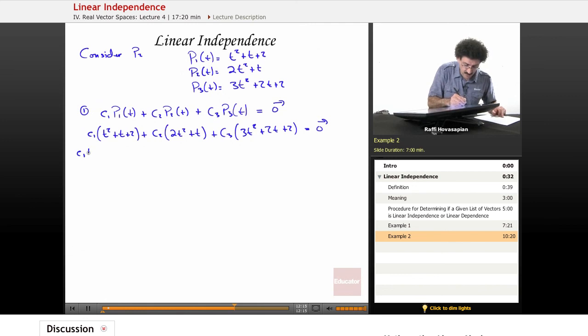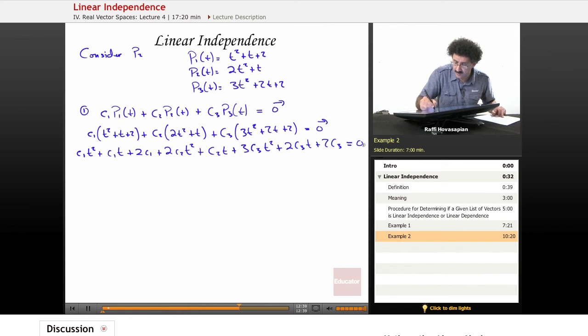So I have C1t squared plus C1t plus 2C1 plus 2C2t squared plus C2t plus 3C3t squared plus 2C3t plus 2C3 equals 0.